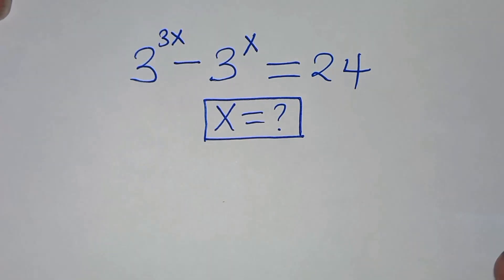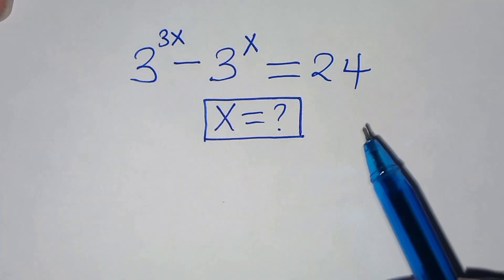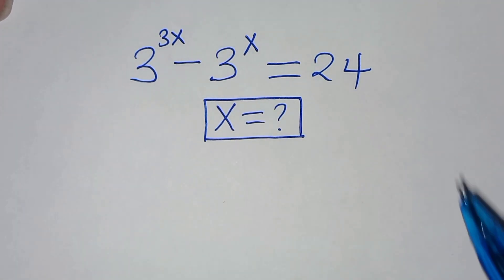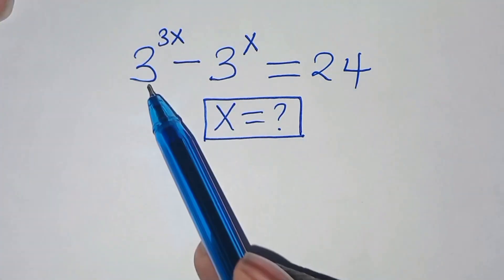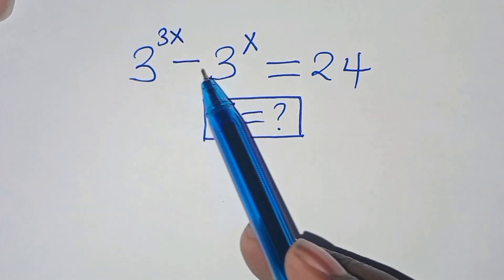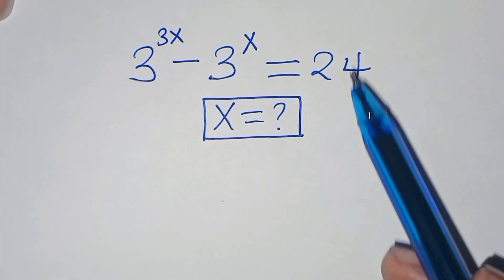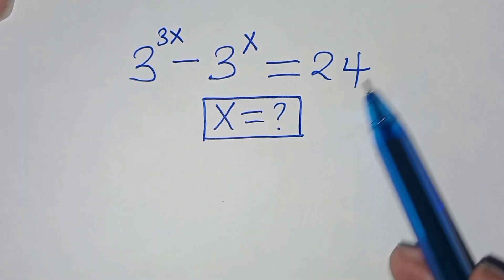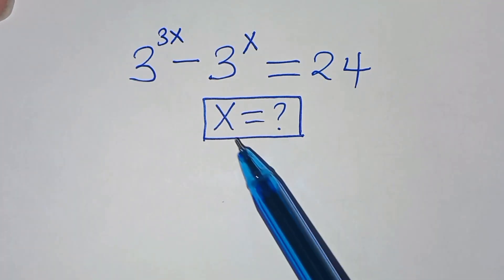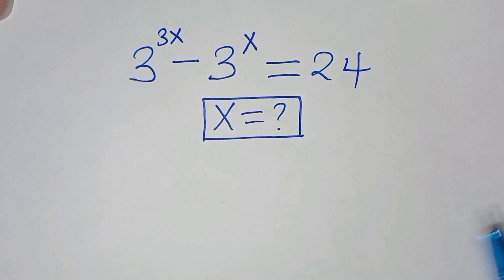Hello everyone, you are welcome to solve this nice algebra problem, which is 3 to the power 3x minus 3 to the power x, this is equal to 24. What is the value of x?